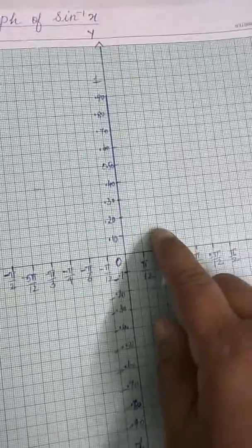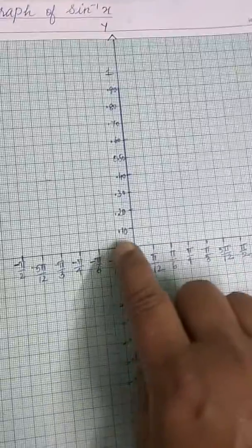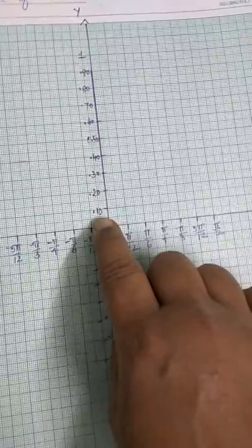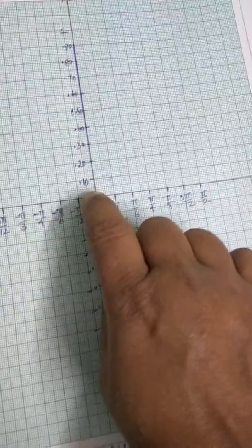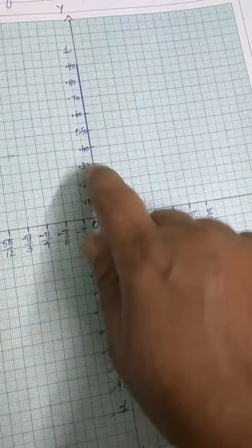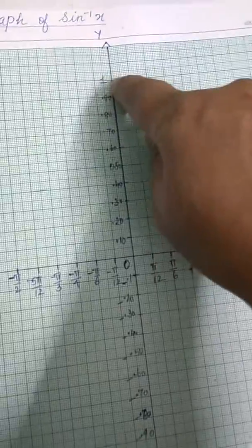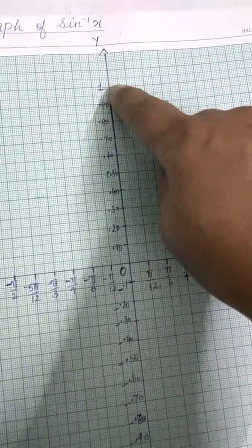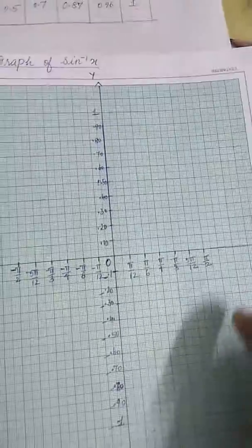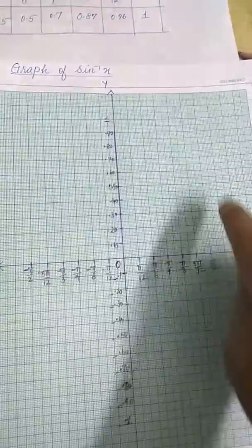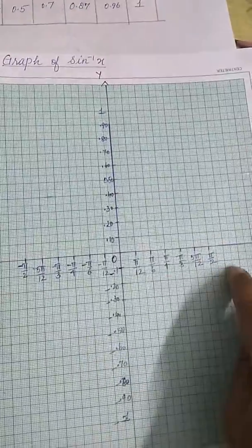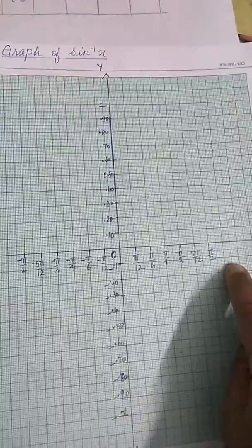I split the range of 1 to minus 1 into 10 equal decimal parts: 0.10, 0.20, 0.30, and likewise up to 1. Mark the y-axis and x-axis like this.